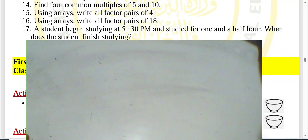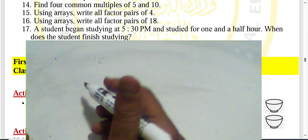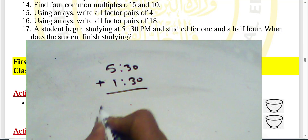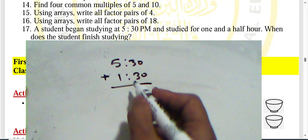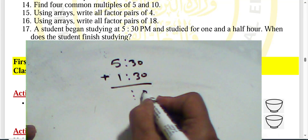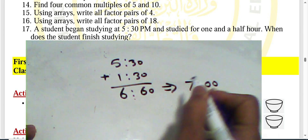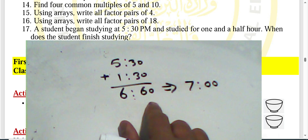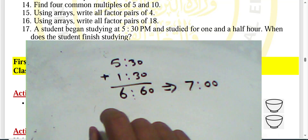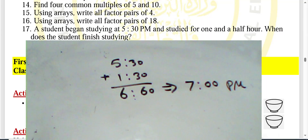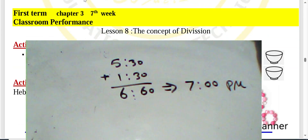Question seventeen: a student began studying at 5:30 PM and studied for one and a half hours. Adding 30 minutes plus 30 minutes equals 60 minutes, which equals one hour. So five plus one plus one gives seven — the student finished at 7:00 PM. This is the last question for weekly assessment number six.